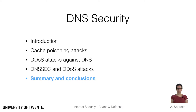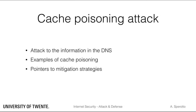Let's summarize what we have learned about DNS security. First, we have explored cache poisoning attacks, as an example of attacks to the information in the DNS. We have seen several variants of attacks, with an increasing degree of complexity and gain for the attacker. Finally, we have looked at possible mitigation strategies.